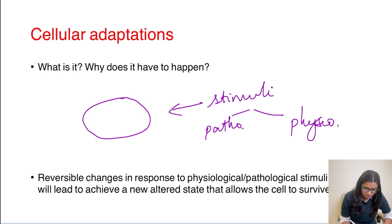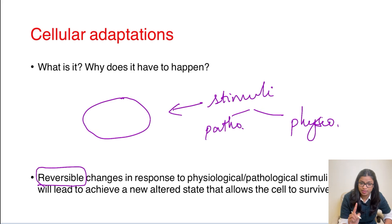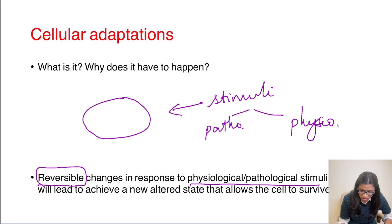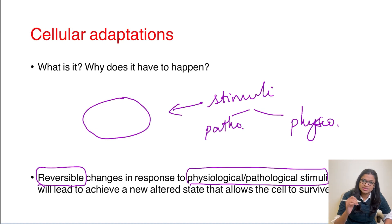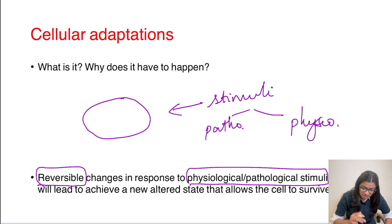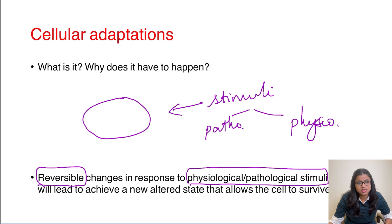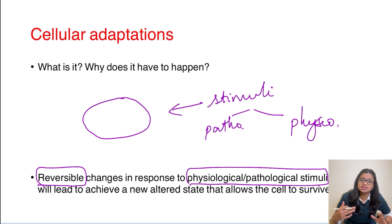Remember, these changes are always reversible — it is very important. Whenever the stimuli, whether pathological or physiological, has been removed, the cell state can revert back to its normal state. These reversible changes in response to physiological or pathological stimuli, so that the cell achieves a new state and can survive in the altered environment, are called cellular adaptations.